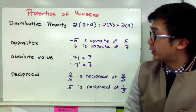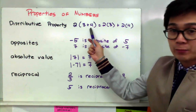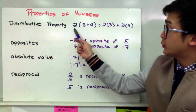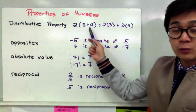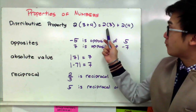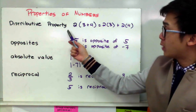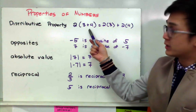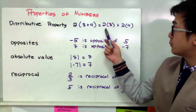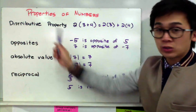The distributive property is given by this example. Let's say you have three plus four inside the parentheses and two outside the parentheses. If you distribute two to three and to four — which is basically multiplying two by three and four — it will still be the same as two times three plus two times four. That is the distributive property. So if you add three and four to get seven, then multiply by two, you still get 14, which is the same as six plus eight.